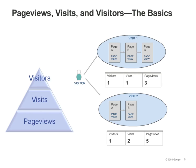Generally, the visitors metric will be smaller than the visits metric, which in turn will be smaller than the pageviews metric. For example, one visitor could visit a site two times and generate a total of five pageviews.